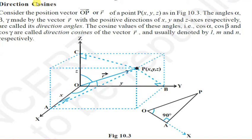Now, the direction cosines of the vector. Suppose we have a point in space having coordinates x, y, z and OP is the position vector of this point. Suppose this position vector OP is making an angle alpha with x axis, beta with y axis, and gamma with z axis. Then cos alpha, cos beta, and cos gamma are called the direction cosines of the vector r.